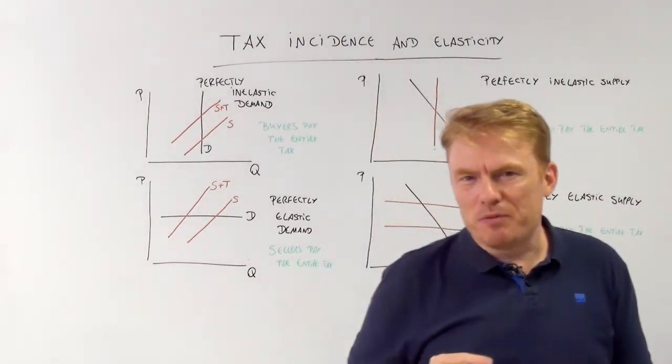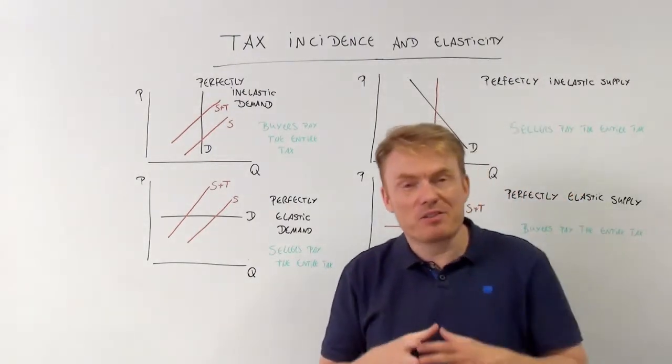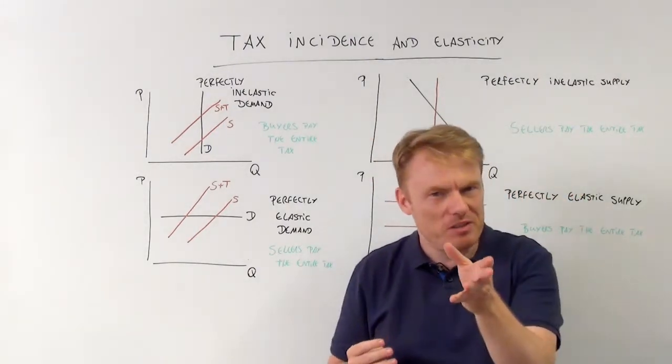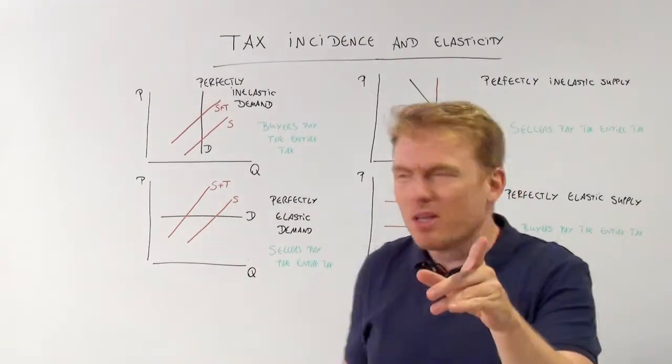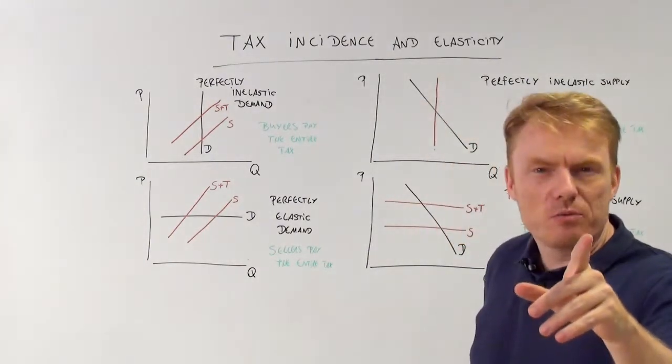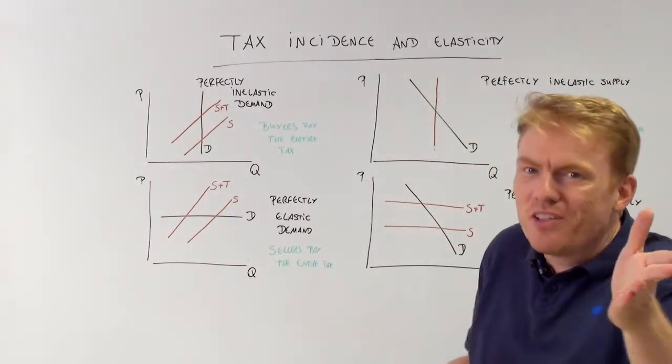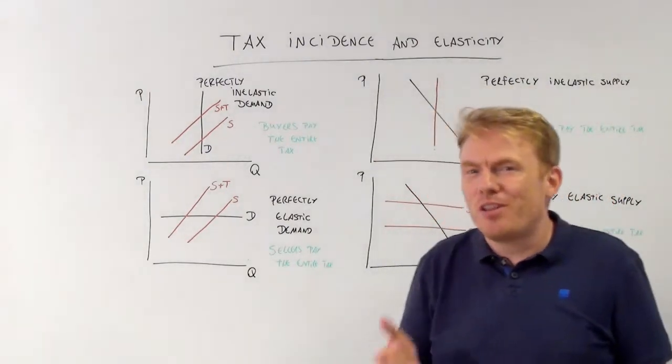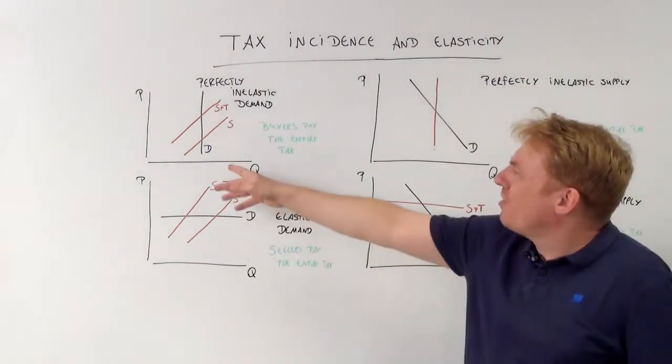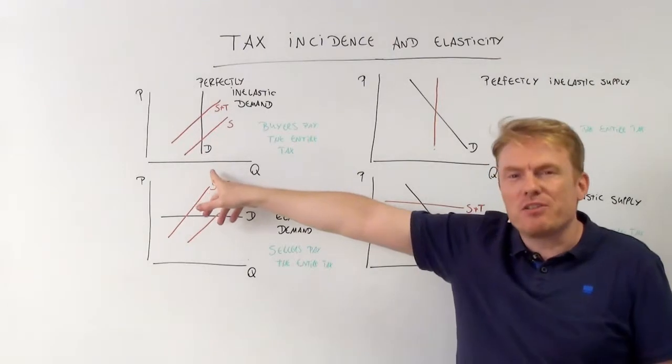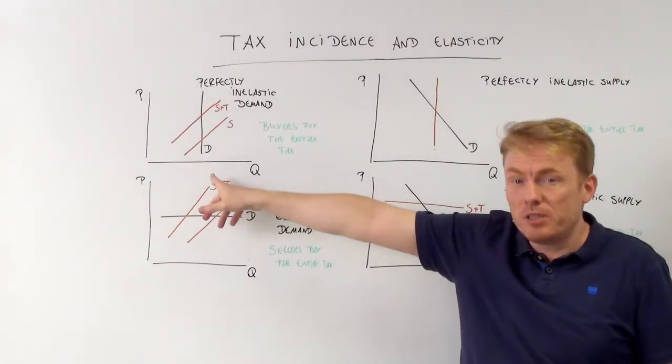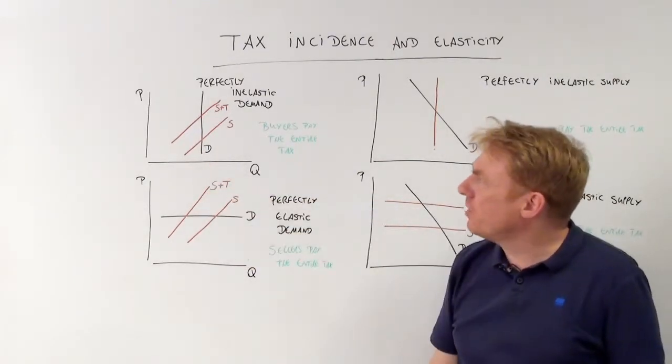What's an example of this? Diabetics, people who suffer from diabetes, have the problem that if the price of insulin rises, there is no way to change the demand, the quantity demanded of insulin, because they are totally dependent on this single good.